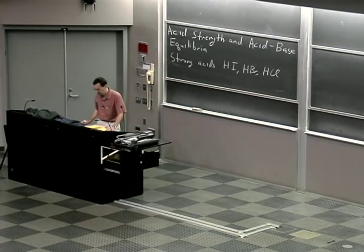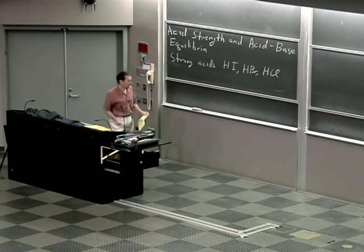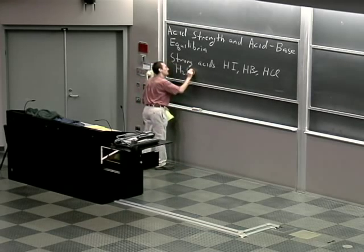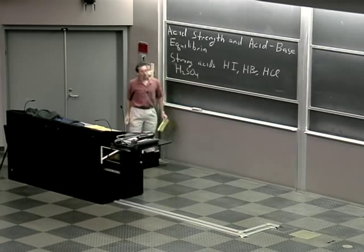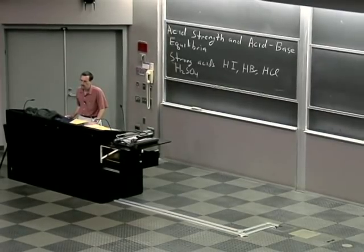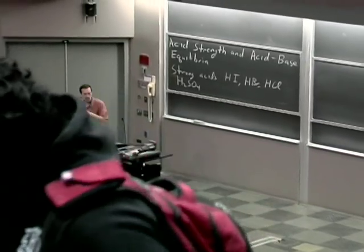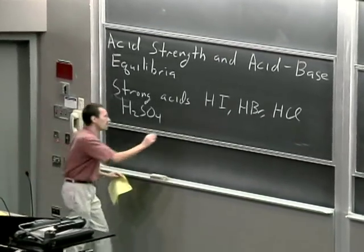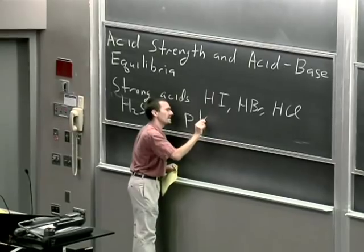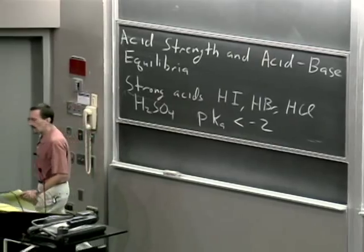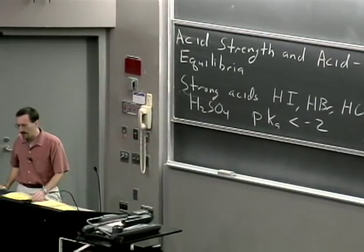When you dissolve them, they generate hydriodic acid, hydrochloric acid, and sulfuric acid of course would be another. All of these acids fully dissociate in water. They all have a very significant pKa — a negative pKa value, pKa of less than negative 2.